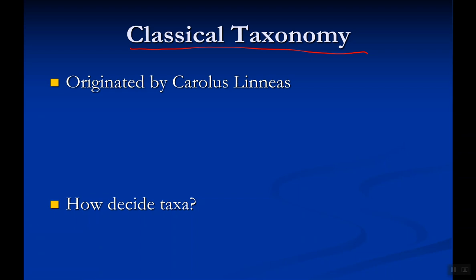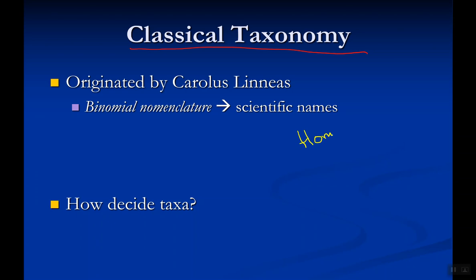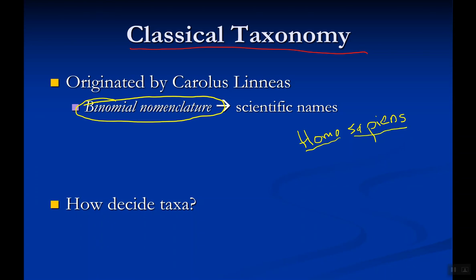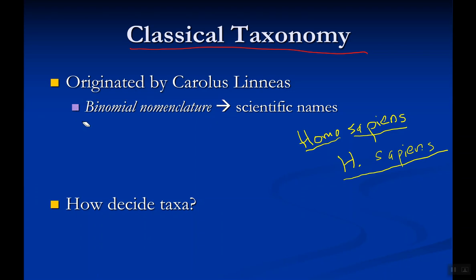Carlos Linnaeus gave us our scientific names through a system called binomial nomenclature. He loved Latin and even Latinized his own name. The scientific name for humans is Homo sapiens — Homo is the genus name and sapiens is the species name. It should be written in italics, or underlined if italics aren't available. The genus can be abbreviated to just a capital letter, so we can write H. sapiens.